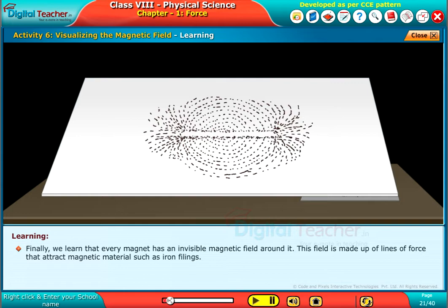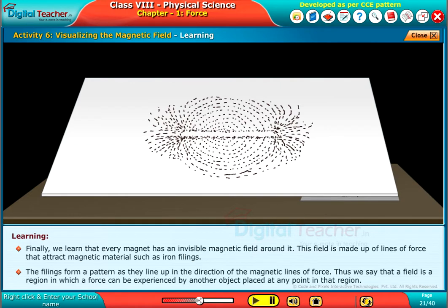Finally, we learned that every magnet has an invisible magnetic field around it. This field is made up of lines of force that attract magnetic material such as iron filings. The filings form a pattern as they line up in the direction of the magnetic lines of force. Thus, we say that a field is a region in which a force can be experienced by another object placed at any point in that region.